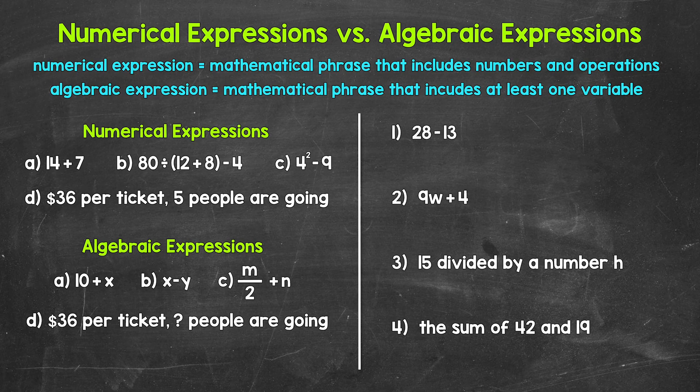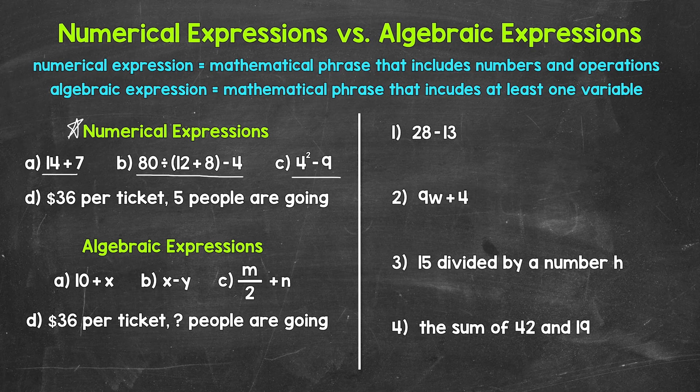So here are some examples right here. We have 14 plus 7, 80 divided by, and then in parentheses, 12 plus 8, end parentheses, minus 4, and then 4 squared minus 9. All of those examples are expressions containing only numbers and operations. So those are numerical expressions.